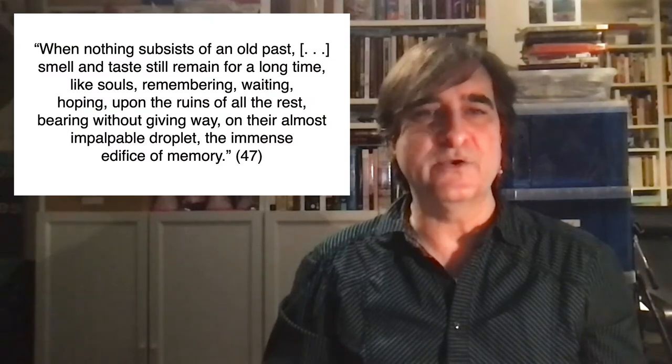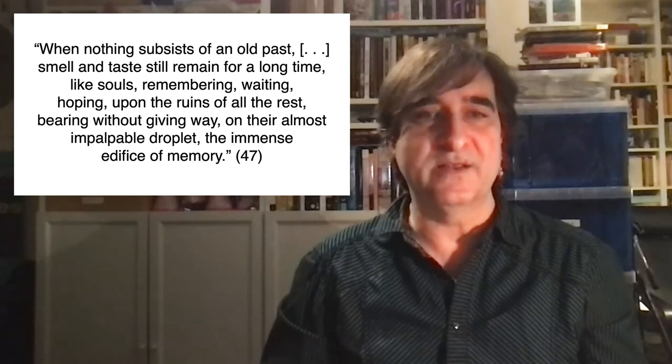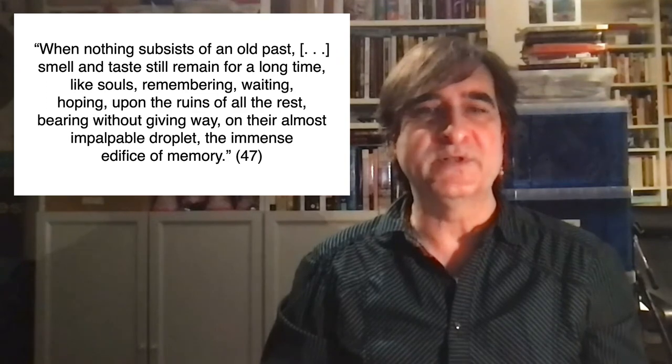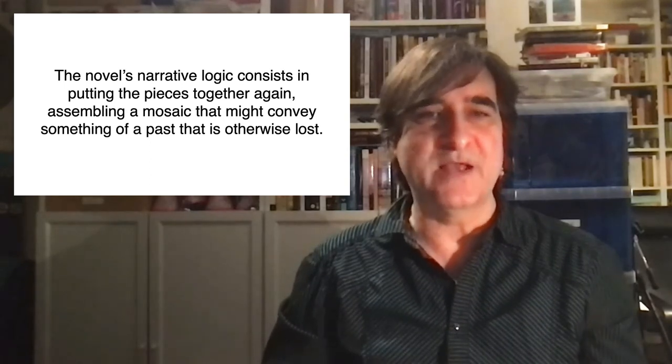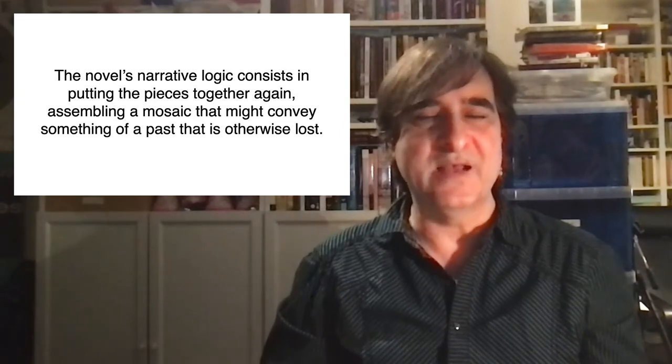Proust's novel also brings together a multitude of fragments, so as to forestall something like ruination. We are reminded, after all, that memory itself is piecemeal. Until the chance encounter with the Madeleine, much of the narrator's youth in Combray remained steeped in oblivion. 'It was all really quite dead to me,' he tells us. And when the recollection comes flooding back, prompted by what are literally morsels or scraps — a mouthful of tea mixed with cake-crumbs — the structure of the edifice of memory resting on an almost impalpable droplet is described in terms very similar to Eliot's, as relying upon 'a fragile support amid the ruins of all the rest.' In every other respect, because of these recollections abandoned so long outside my memory, nothing survived. Everything had come apart. The novel's narrative logic, then, consists in putting the pieces back together again, assembling a mosaic that might convey something of a past that is otherwise lost.